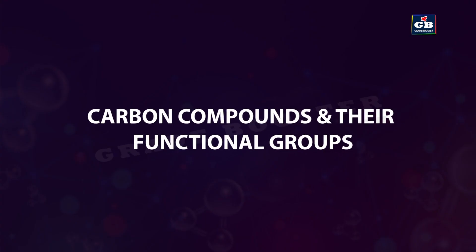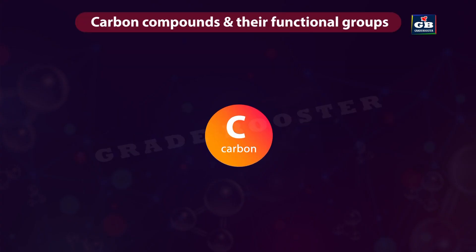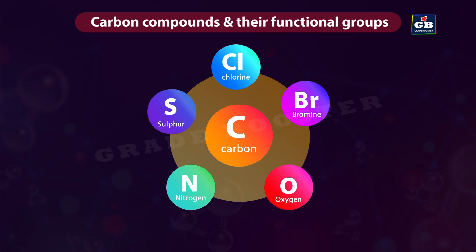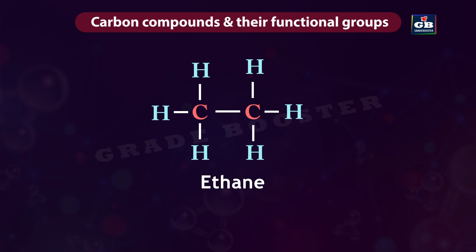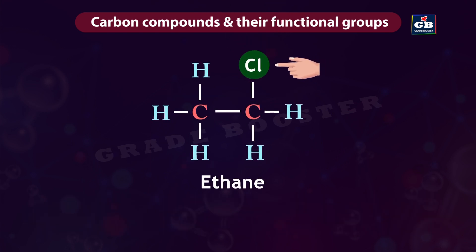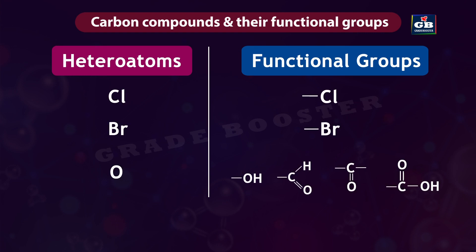Carbon compounds and their functional groups. Carbon can form bonds with other elements like chlorine, bromine, oxygen, nitrogen, and sulfur, forming new carbon compounds. New carbon compounds are formed when a hydrogen atom of the hydrocarbon chain is replaced by an element. The element that replaces the hydrogen atom is called a hetero atom. These hetero atoms form the functional groups of the compounds, and sometimes hetero atoms pair up with some other atoms to form groups.